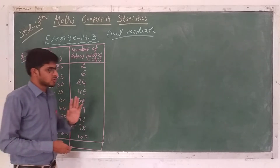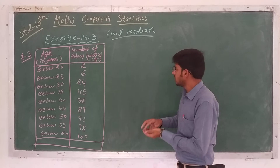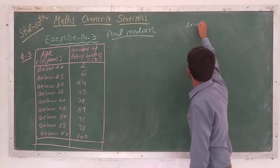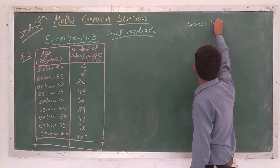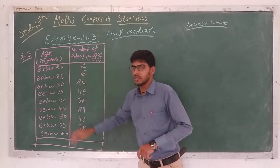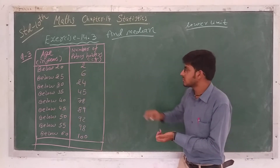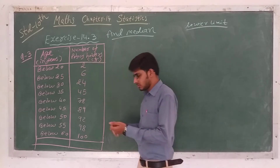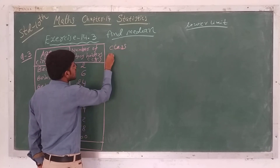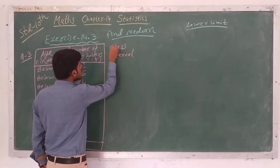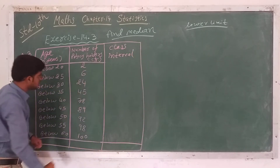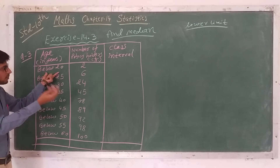In the median formula we have to use the lower limit. But in the given data, the lower limit is not given directly, so we have to convert the data into class interval form first. So the third column will be the class interval.